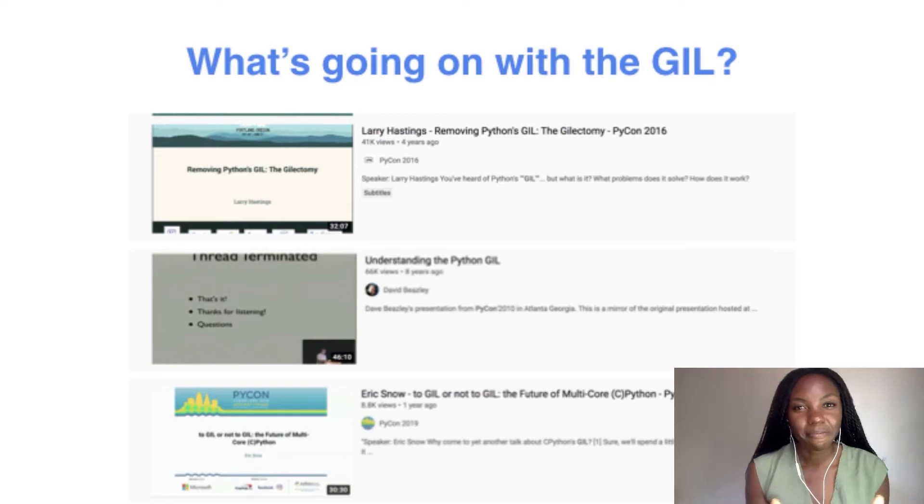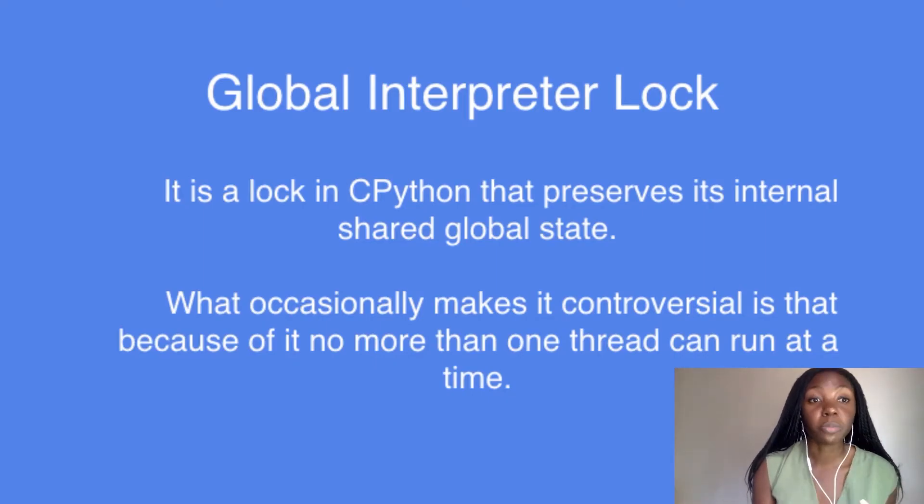And in the past, Python hasn't actually had a very friendly reputation with things like multithreading and parallelism because of something called the GIL. So I wouldn't really have talked about Python and concurrency, Python and speed, even if I don't at least mention the GIL. What exactly is going on with Python's GIL? And if you search online for Python talks on the GIL, you get this very strange mix of suggestions. As you can see, some people are talking about removing it completely. Others are talking about understanding it more, trying to help others understand it. And even more recently, Eric Snow gave a talk asking whether to GIL or not to GIL. So generally, it seems like it has this really big reputation. So what is the GIL? Well, the GIL is Python's global interpreter lock. And this is a lock in CPython that preserves its internal shared global state. And what occasionally makes the GIL controversial is that because of it, no more than one thread can run at a time.